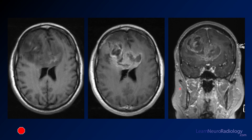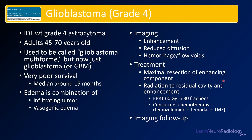This is almost certainly a high-grade glioma — specifically a grade 4 glioblastoma. These glioblastomas are IDH wild-type astrocytomas affecting slightly older patients, in their 40s to 70s. They're now just called GBM or glioblastomas — the term 'multiforme' has been dropped. Survival is very poor, around 15–16 months. The surrounding edema contains infiltrating tumor cells, not just vasogenic edema, which makes these very hard to treat. On imaging you see enhancement, possible reduced diffusion, hemorrhage, or flow voids. Treatment is maximal resection followed by radiation of residual disease.